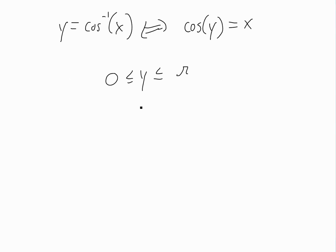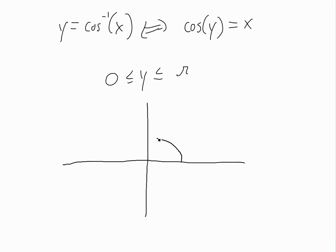So the function looks something like this — the inverse cosine — where this is one and this is negative one on the x-axis, and this is pi here and this is zero on the y-axis. So the y-axis shows values from zero to pi, the x-axis shows where it's defined.